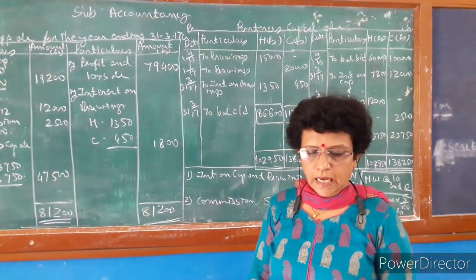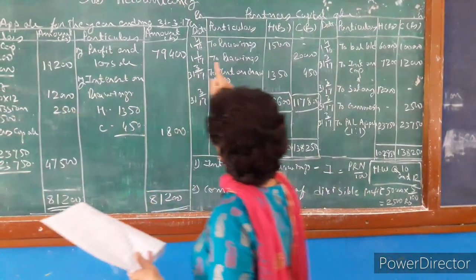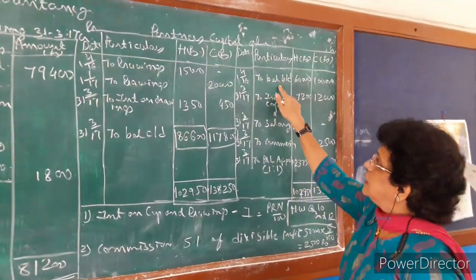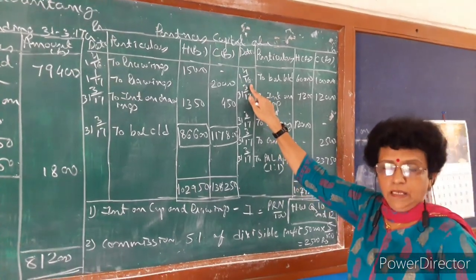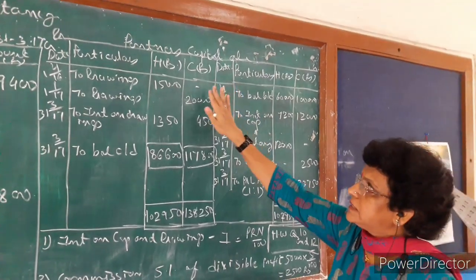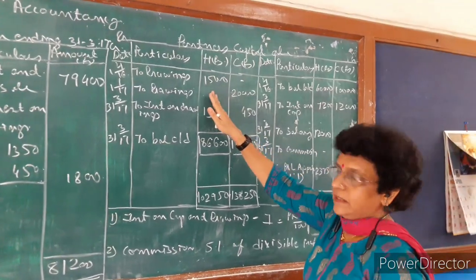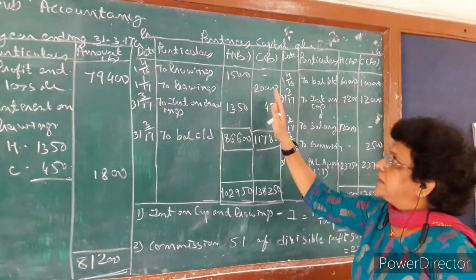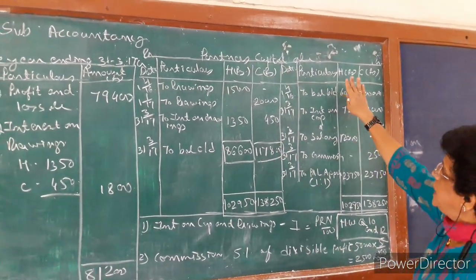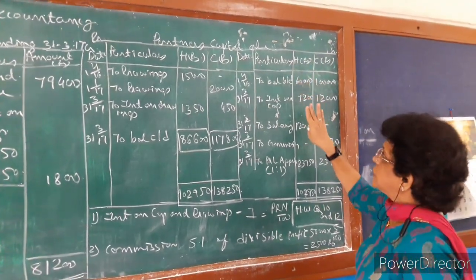The question states that Harpan and Jirag are partners of a firm. You remember in Class 11, we have already learned the ledger posting. Here the same ledger of capital account is to be prepared, but in partnership, as we have more partners, that many columns are to be prepared. In this, we have two partners, so we need two capital columns.